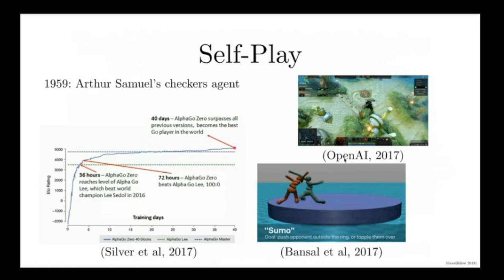Arthur Samuel himself was not an excellent checkers player, and at the time, people believed that computer programs could only do what their programmers instructed them to do. This implied that Arthur Samuel should not be able to create a strong checkers player. He disproved this general belief by creating a checkers-playing agent that played games against itself and went on to become a better checkers player than he was.